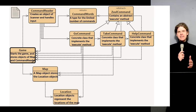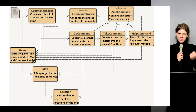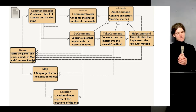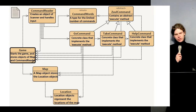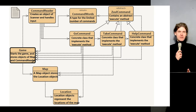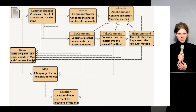We've got a CommandWords enumerate type — a custom type for a limited number of commands. Things like go, help, take, and quit are already in there; you may choose to expand it. Then we've got the ZoolCommand abstract class and child classes — GoCommand, TakeCommand, and HelpCommand — which inherit from ZoolCommand. These three classes embody a design pattern called the command pattern, which we'll introduce later in this lecture.